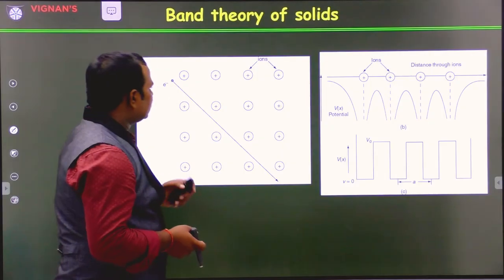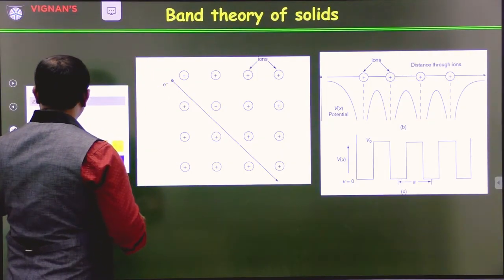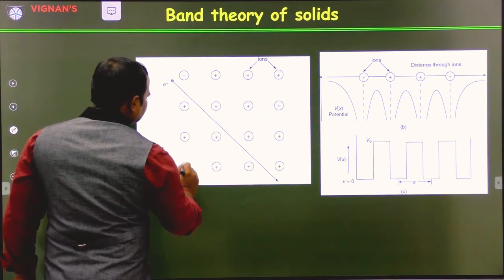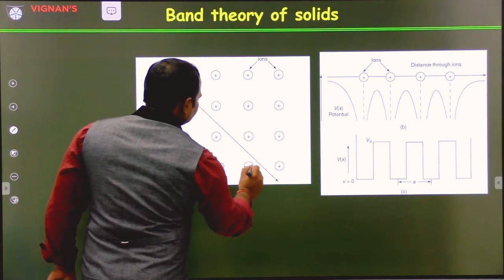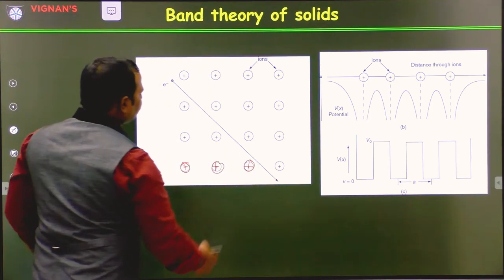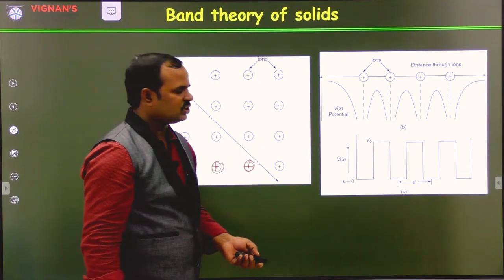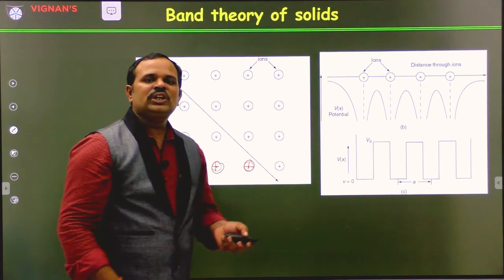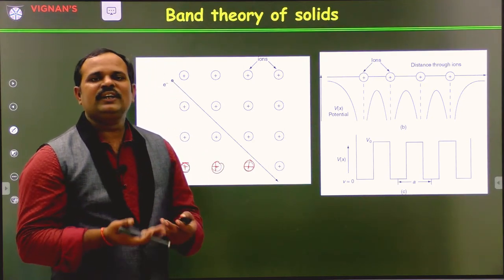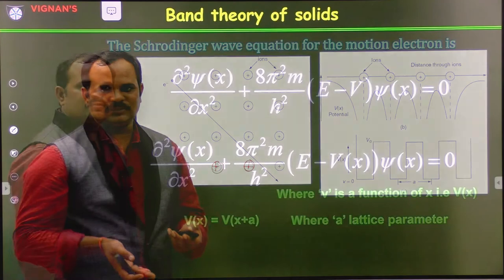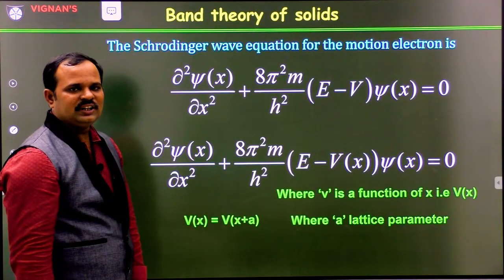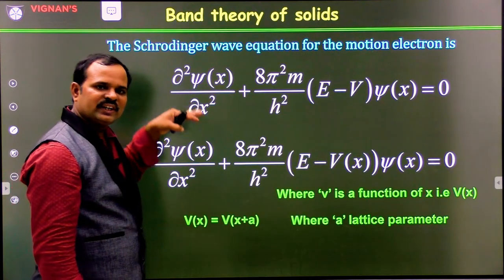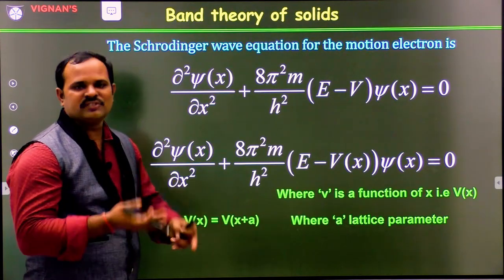So the metal ions will also be in regular periodic positions, and the potential experienced by the electron will also have a periodicity equal to the periodicity of the lattice. These are the assumptions made by Bloch to explain the band theory of solids. When an electron is moving under such a periodic potential, we can write the Schrödinger wave equation and then solve it to get the energy levels and wave functions.